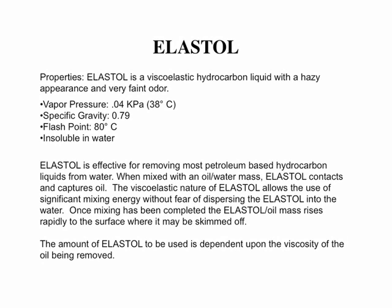Elastal is an organic long-chain polymer. Specifically, it is a viscoelastic hydrocarbon and comes as liquid or powder. The liquid has a hazy appearance and a very faint odor. Its specific gravity is 0.79, hence it floats on water.